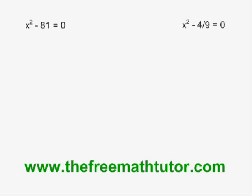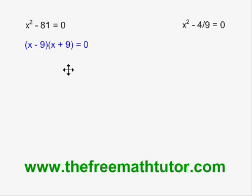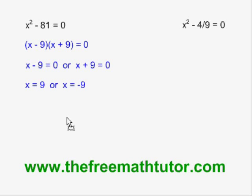When asked to solve a quadratic equation using factoring, one of the methods we might need to use is the difference of squares factoring method. Both of these examples require that method. On the left, applying difference of squares, I get the factors x minus 9 and x plus 9. Then I do the split, make each of these equal to 0, and isolate the x in each case. I get x equals 9 or x equals negative 9, and therefore 9 and negative 9 are the roots for this quadratic equation.